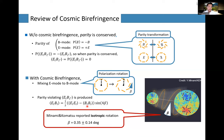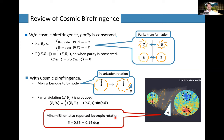We have already observed the EE auto-spectrum from CMB, so we expect EB cross-correlation to be produced by cosmic birefringence. Minami and Komatsu used a more developed expression, but basically this is what they did. They also assumed isotropic birefringence, meaning the rotation angle beta is the same for CMB photons coming from all directions of the sky.